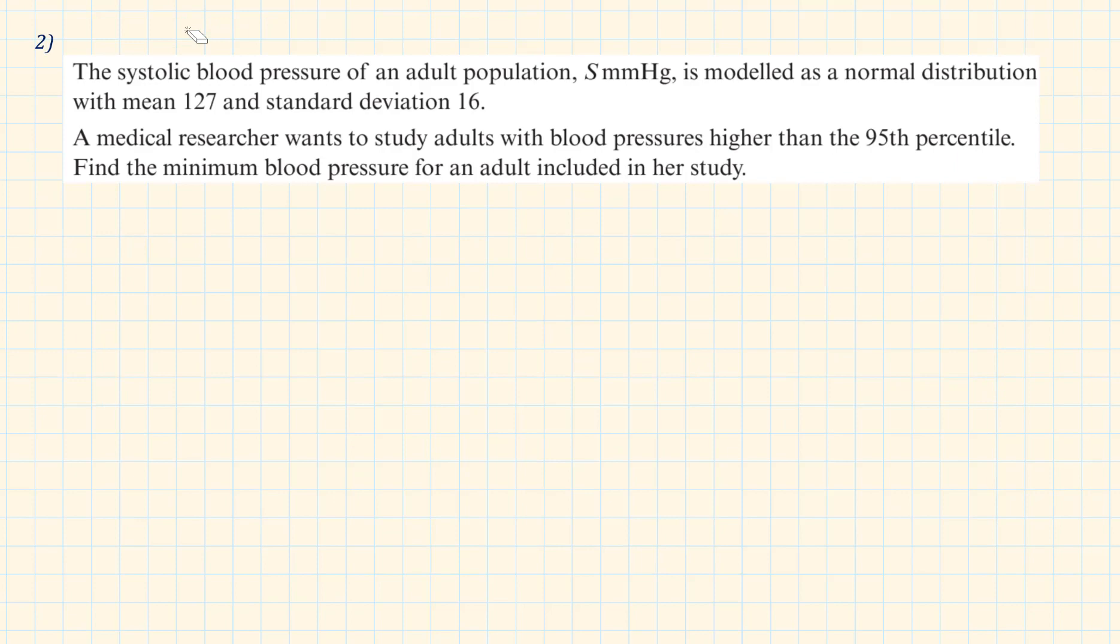Number 2. When we have a worded question we have to extract only the most relevant keywords. In the first sentence we have S is normally distributed with a mean of 127 and standard deviation 16.